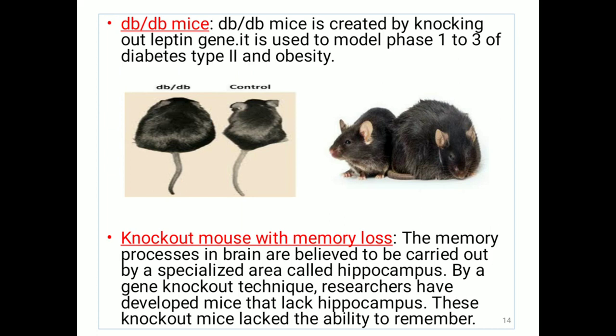Third, db/db mice — created by knocking out the leptin gene, and the resulting mice will be obese and develop diabetes. Hence, it can be used to model phases 1 to 3 of type 2 diabetes and obesity. Fourth, knockout mice with memory loss — the memory processes in the brain are believed to be carried out by a specialized area called the hippocampus. By gene knockout technique, researchers have developed mice that lack the hippocampus, and these knockout mice lack the ability to remember.